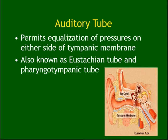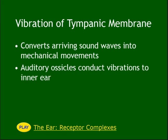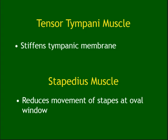The auditory tube — also called the Eustachian tube or pharyngotympanic tube — functions to equalize pressure on either side of the tympanic membrane. There are two muscles: tensor tympani (tenses the tympanic membrane to produce better sound) and stapedius (reduces the movement of the stapes at the oval window).